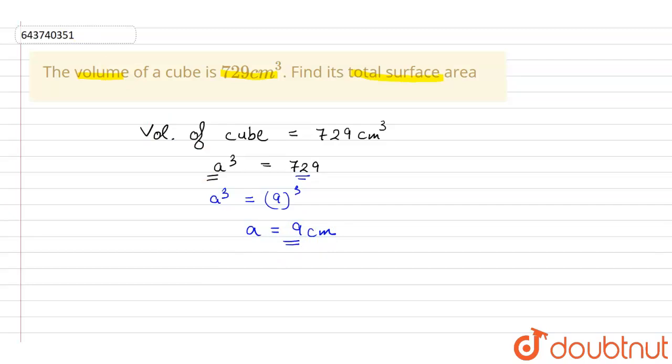Now we got the side as 9 centimeter. Therefore the total surface area that is TSA of cube will be equal to 6a square. If you put the value of a as 9 this will be 6 into 9 whole square that is 6 into 81 which we get as 486 centimeter square. So this is the total surface area of the cube.